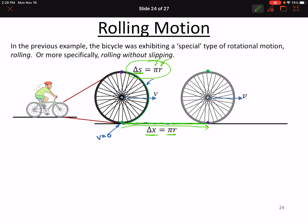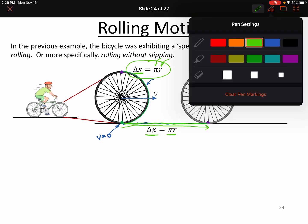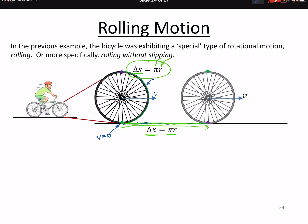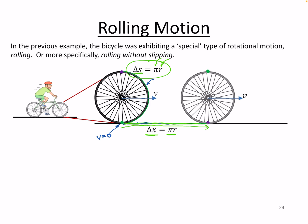This is the condition for rolling motion, usually stated a couple of different ways. For rolling without slipping, delta x equals delta s.